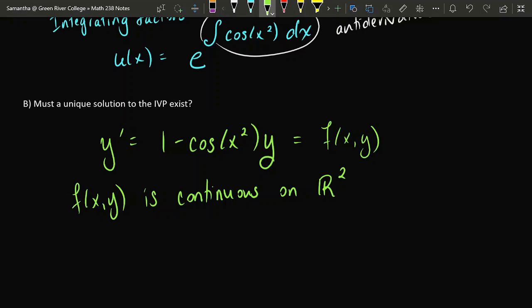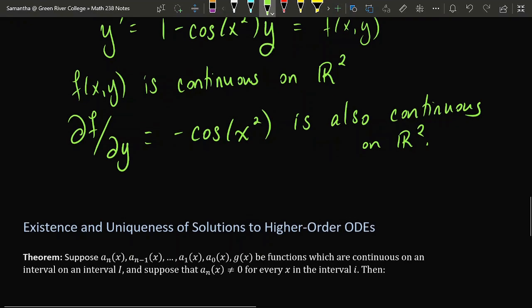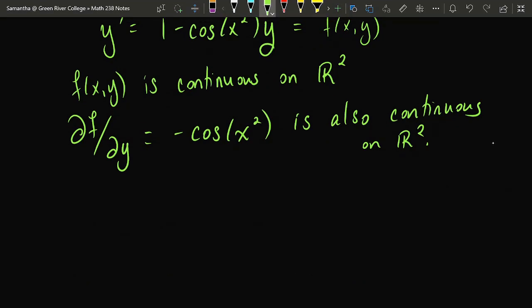There are no holes, there are no gaps, no division by zero, no weird square roots. Nothing that could cause any problems for this function, not for any x or any y. And if I calculate the partial derivative with respect to y, then I get -cos(x²), which is also continuous on R². So since the function f(x, y) and its partial derivative are so well behaved, we are guaranteed a unique solution to the initial value problem.